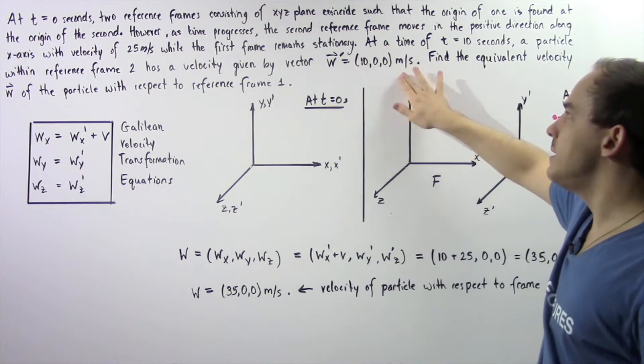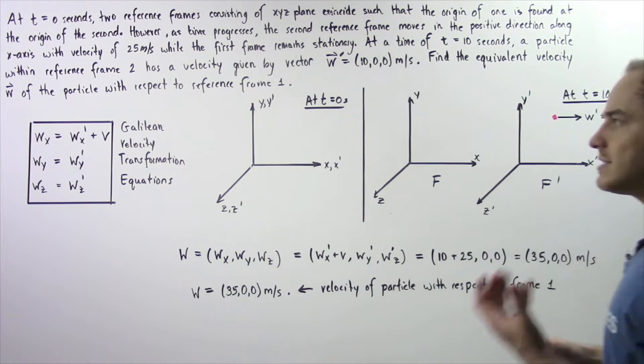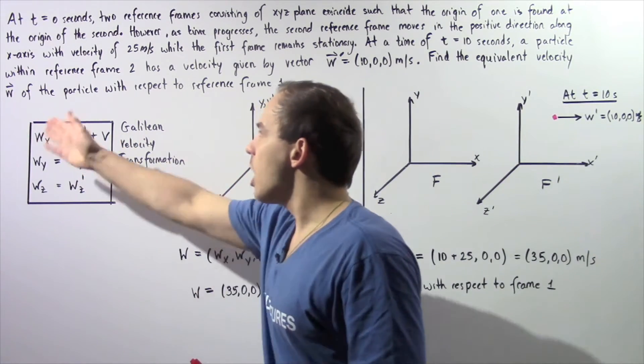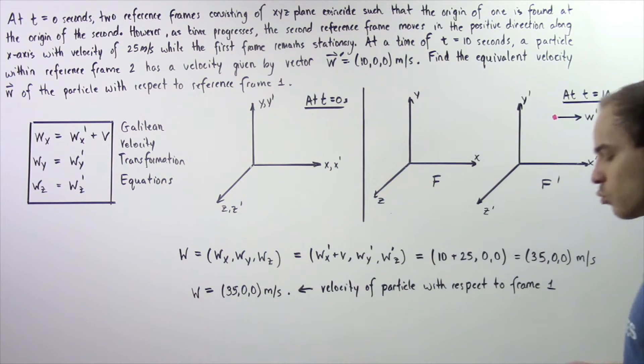We have 10, 0, 0 meters per second. Find the equivalent velocity vector w of the particle with respect to reference frame number one.